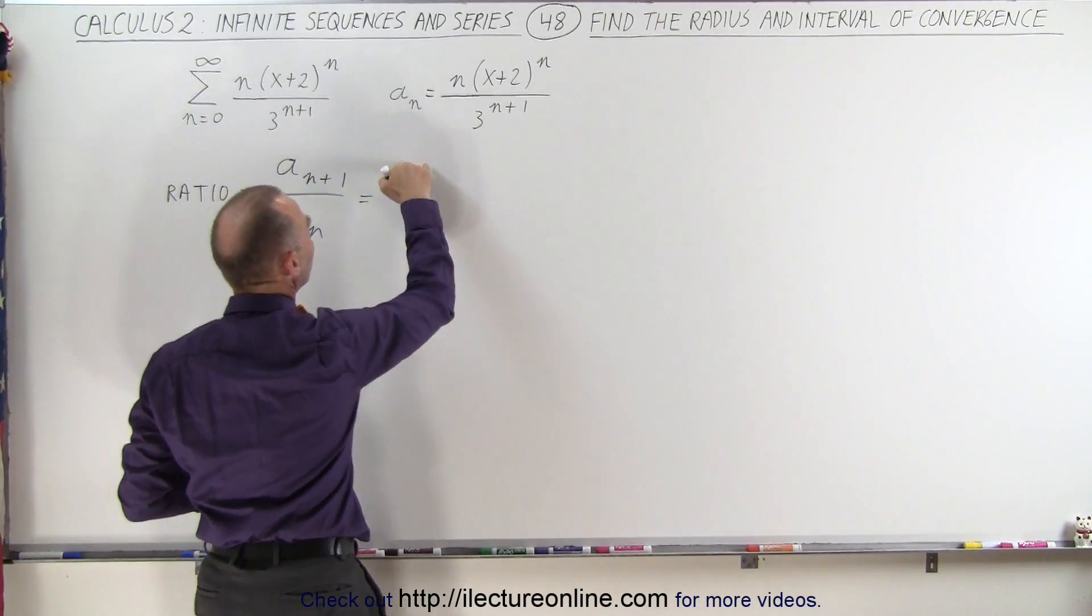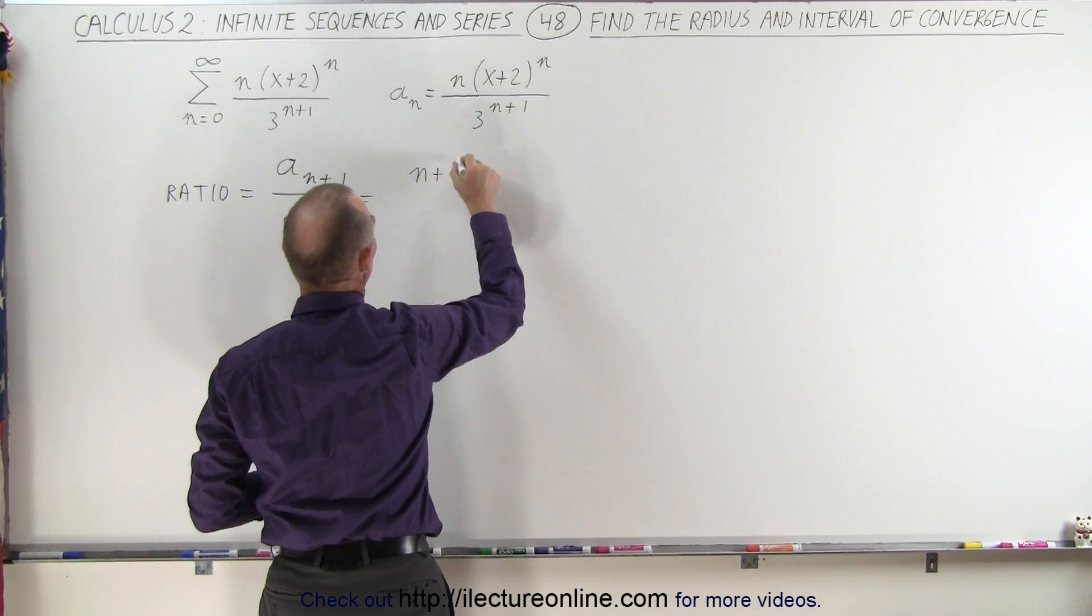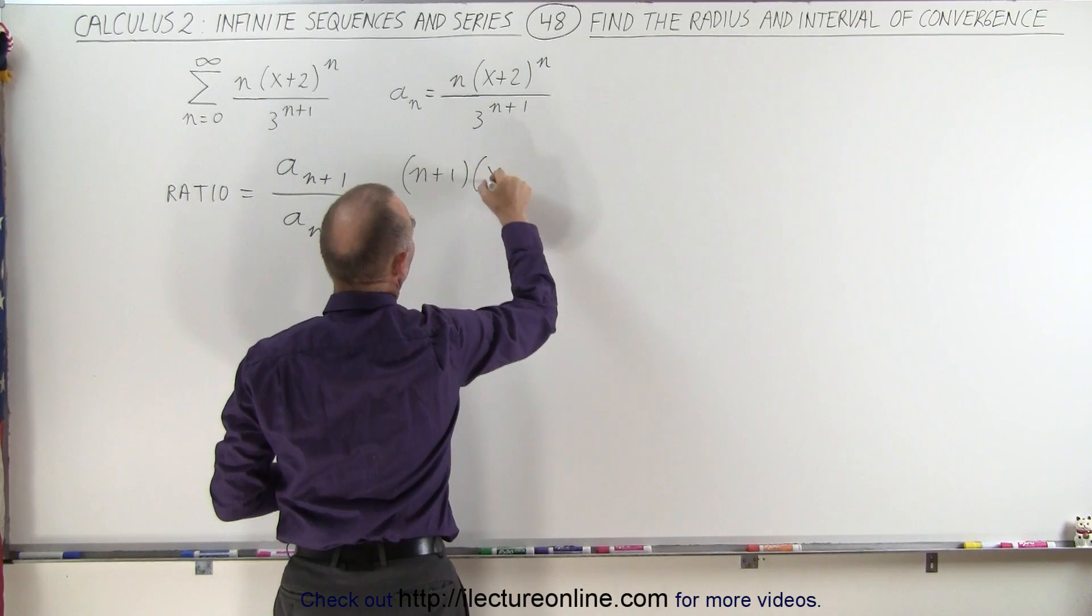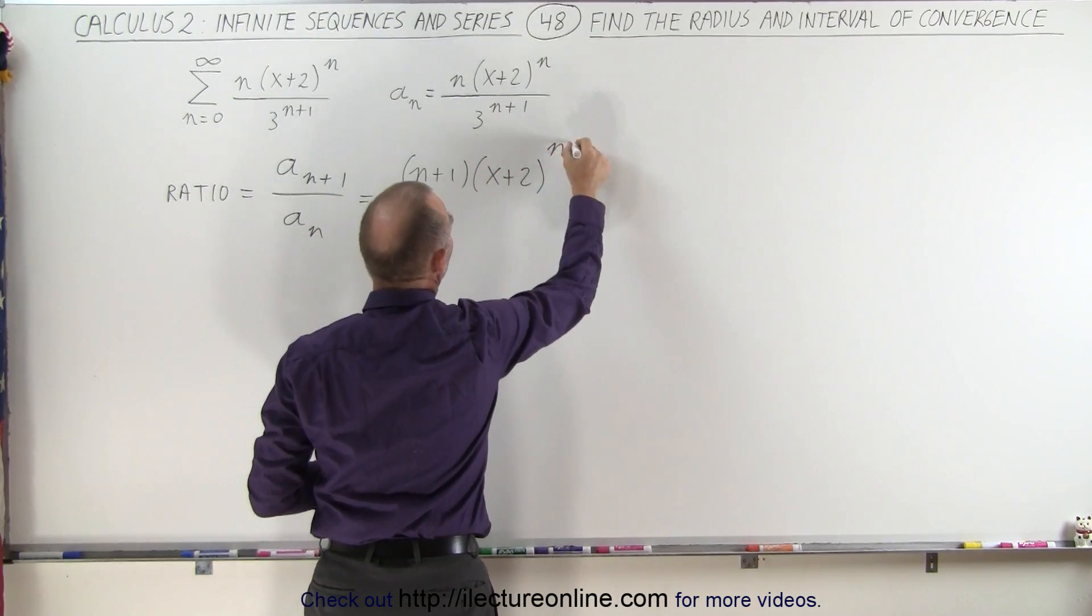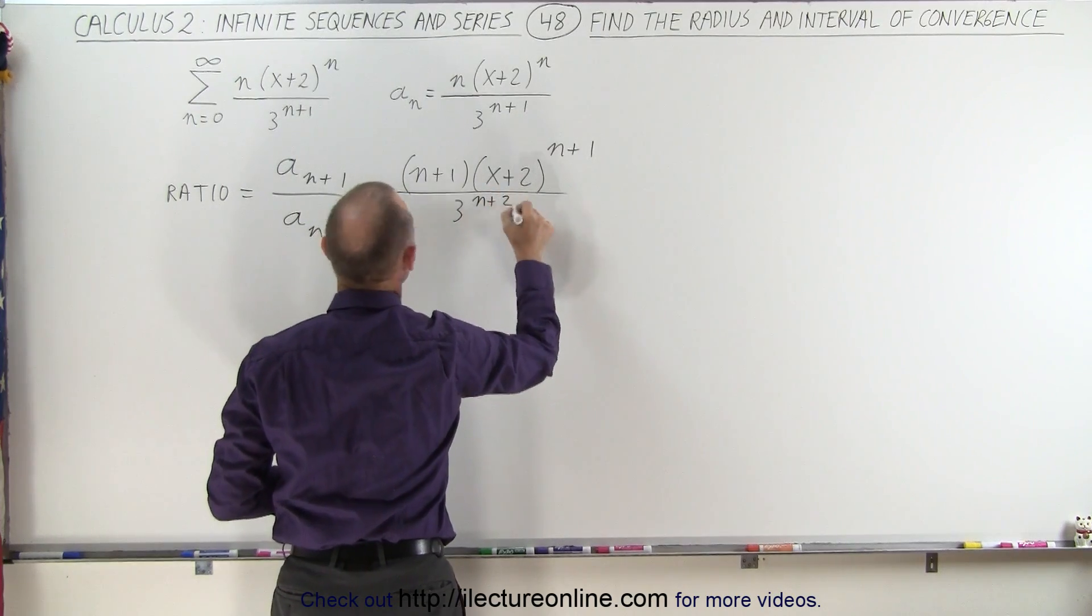The top, the numerator, we'll find by adding a 1 to every one of the n's, so this becomes (n+1) times (x+2) to the (n+1) power divided by 3 to the (n+2) power.